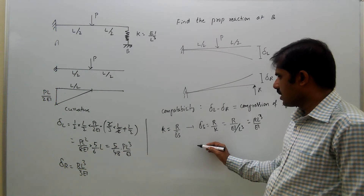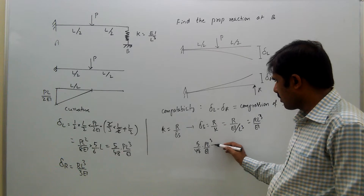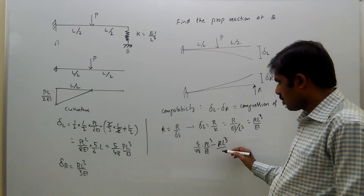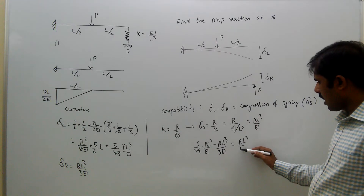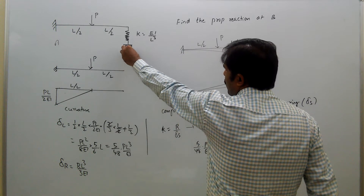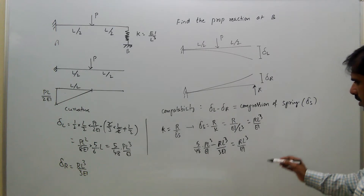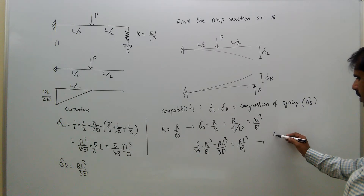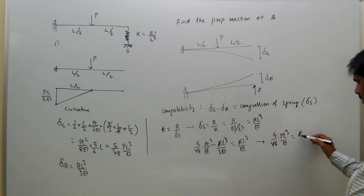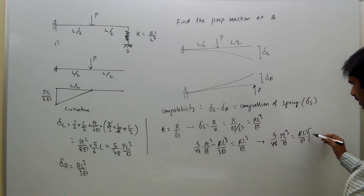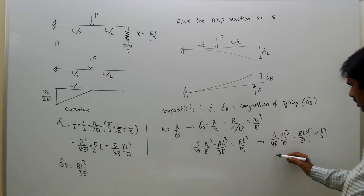Applying the compatibility condition: delta L minus delta R equals delta S, that is 5/48 · (P·l³/EI) minus R·l³/(3EI) equals R·l³/a. Since whatever reaction is present, the force returns through the spring. Rearranging: 5/48 · (P·l³/EI) equals R·l³/EI times (1 + 1/3). The l³/EI terms cancel, giving 5/48 · P equals 4/3 · R.